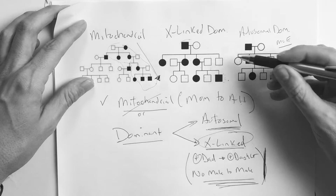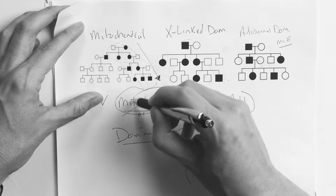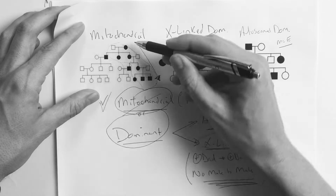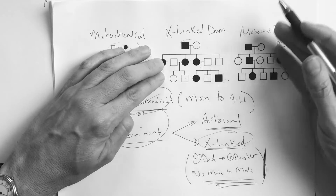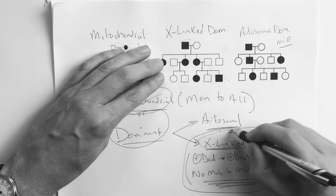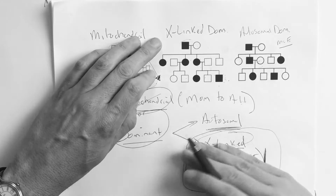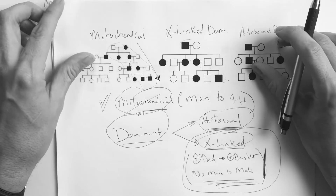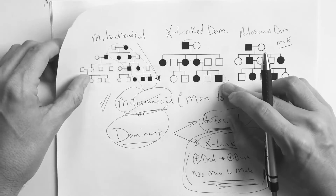So you see it every generation — think mitochondrial or dominant. Rule out mitochondrial first. Then when you see it's dominant, ask the X-linked questions. If they're supportive, go with X-linked. If they're not, default to autosomal. That's how you handle every-generation patterns.